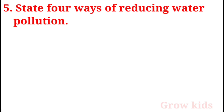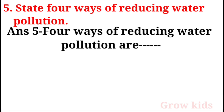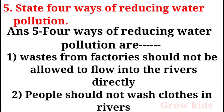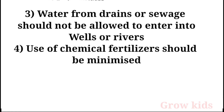Question 5: State four ways of reducing water pollution. Answer: First, waste from factories should not be allowed to flow into rivers. Second, people should not wash clothes in rivers. Third, water from drains should not be allowed to enter wells or rivers. Fourth, use of chemical fertilizers should be minimized.